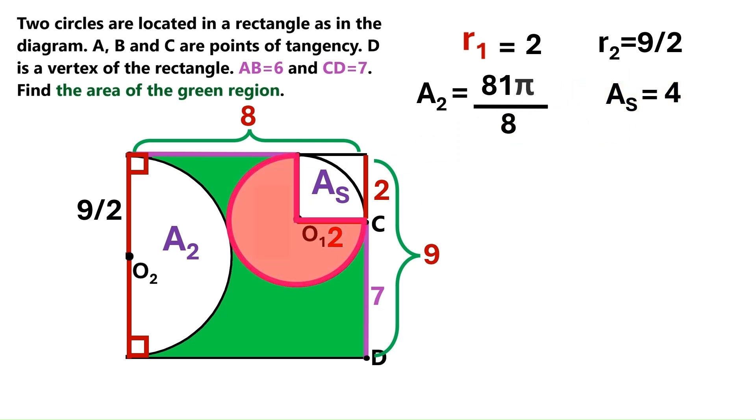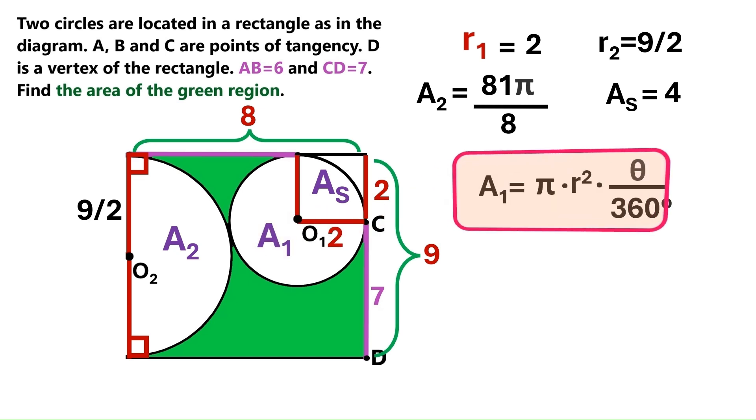Now, we've got a circular sector here, and we'll call its area, area 1. This is the formula for area 1. We know the radius is 2, so let's change this R1 squared to 2 squared, which equals 4.